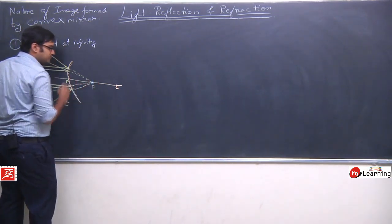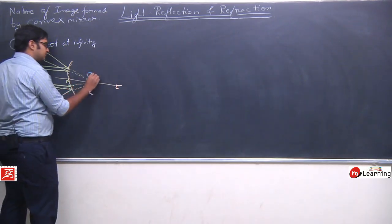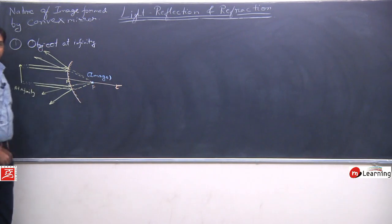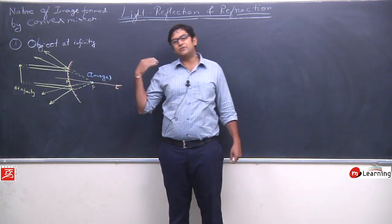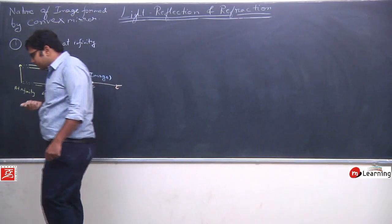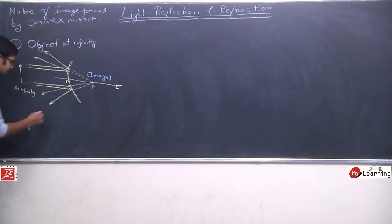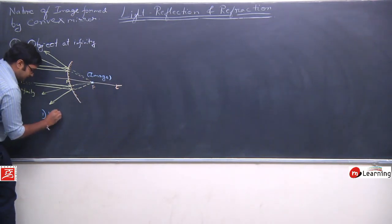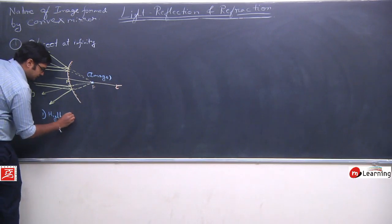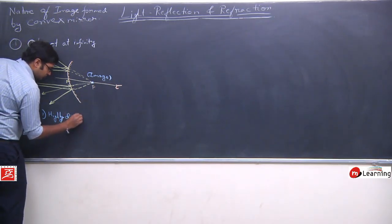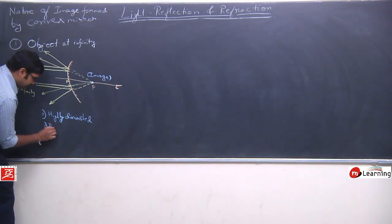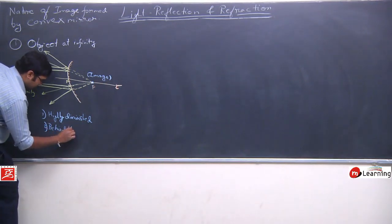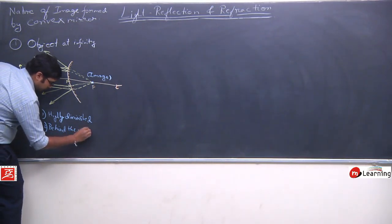We will see a very small image forming here. Now, what is the nature of this image? The image is highly diminished. And because it forms behind the mirror - all images formed behind the mirror are called virtual images. So this will be a virtual image. First nature: it will be highly diminished. Second: it is behind the mirror.